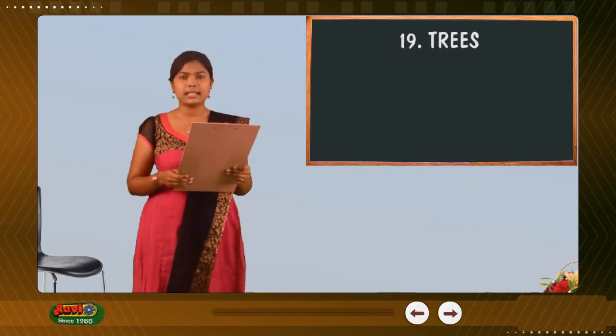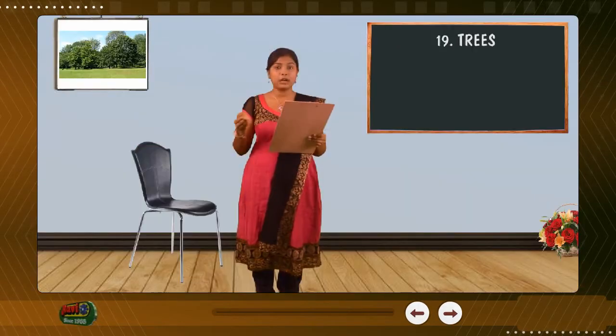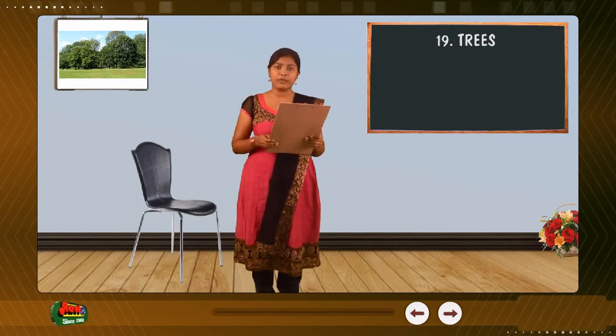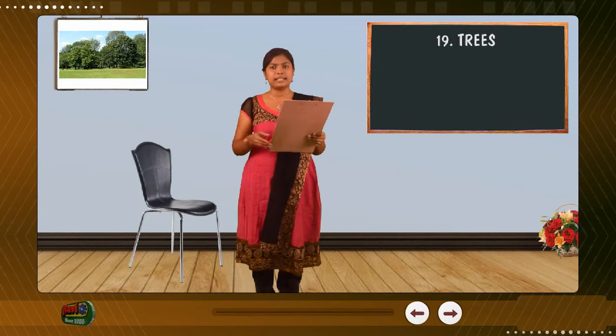The roots of the trees hold the soil firmly and prevent soil erosion. This leads to an increase in the groundwater level and the continuity of the water cycle gets balanced, resulting in good rains.